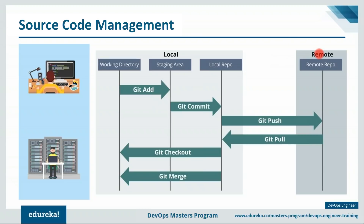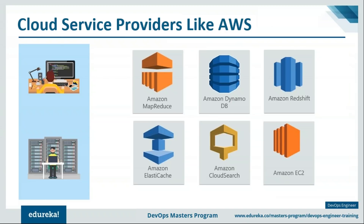In a distributed version control system, you not only have a remote repository but also a local repository, which is a copy of your remote repository. So if the remote repository crashes, you can retrieve the entire version of the project from any of the developers' hard drives. Apart from source code management tools, they should also have experience in deploying applications on Amazon AWS, Google, or Azure.